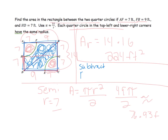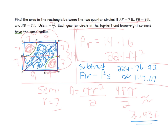Now the part left over — because it says find the area between the two quarter circles — we have to subtract. So we do 224 minus 76.93, which is approximately 147.07 square feet. We say approximately because we used 3.14. Keep in mind that on your assessment you'll be figuring out the whole area and then taking away the pieces you don't want to consider.